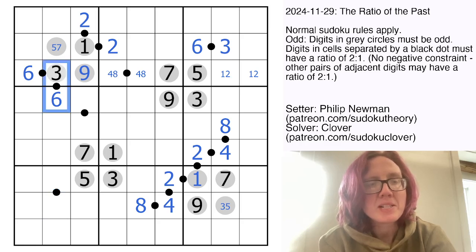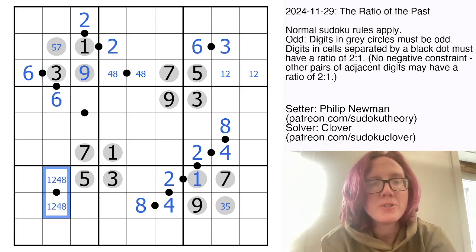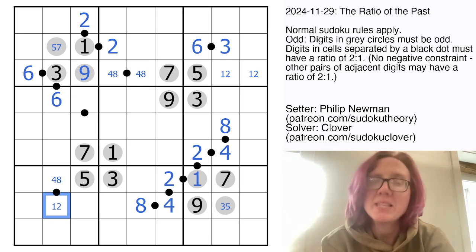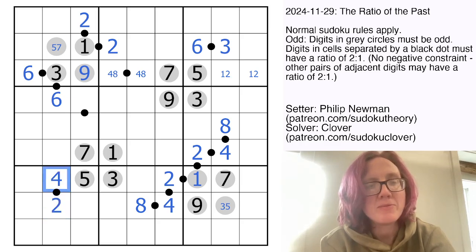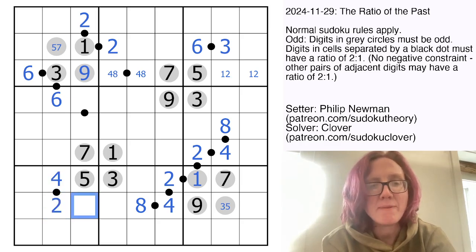Now right here we can't have a 3, 6 pair. So this is some combo of 1, 2, 4, and 8. But this cell here can't be 1 or 2. And this one can't be 4 or 8. So how do we still make that a pair in a ratio of 1 to 2? Well the only way to do it is for that to be 2 and for that to be a 4.